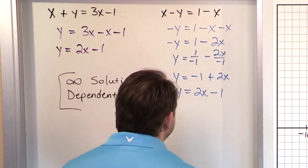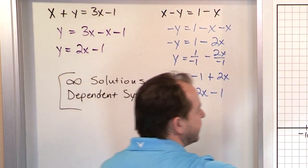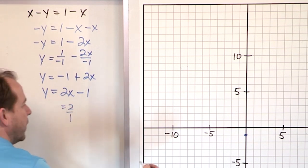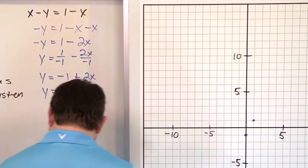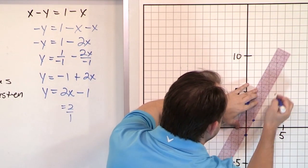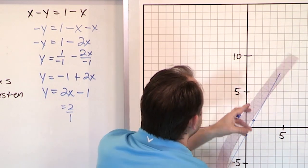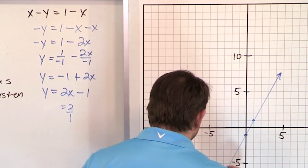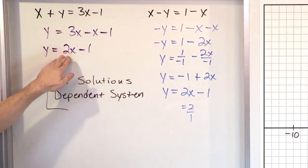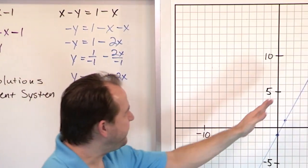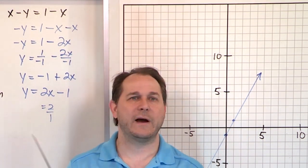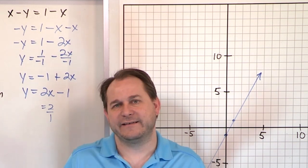Just to be complete, I am going to graph it. We have negative 1 for the y-intercept - there's negative 1. The slope is 2, which is 2 over 1, so rise over run: up 2 over 1. If I was really going to do it properly, I would graph this line in blue, and then I would graph the second line in purple, which would be exactly on top of that line. So every single point is common to both lines. That's why there's infinite solutions - because it's the same line.